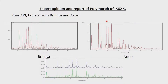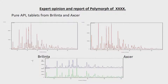Then there is another case. There was a pure API made by a company, tablets made by that company, and also tablets from two other companies who were manufacturing and selling that product. The company which approached us wanted to know whether they have a new polymorph — a little more challenging task. The powder diffraction patterns of the two other companies are shown; if you overlap them you may say they are one and the same, maybe the crystalline quality of one is slightly better, but these two are one and the same.